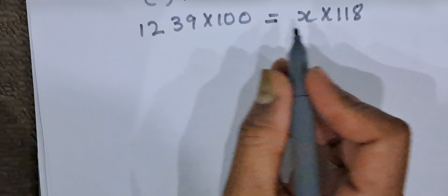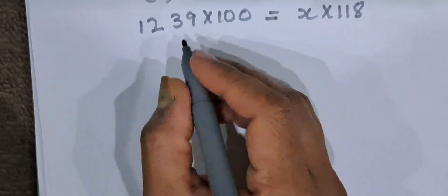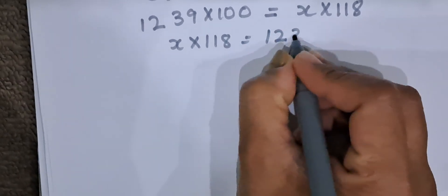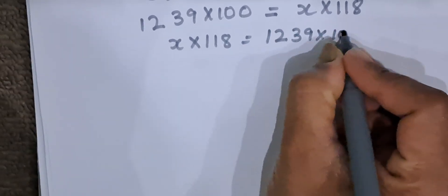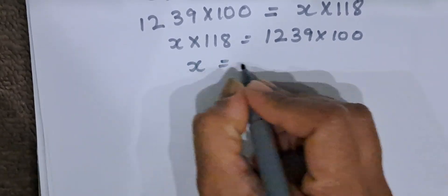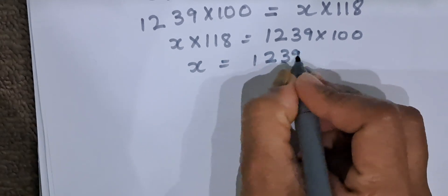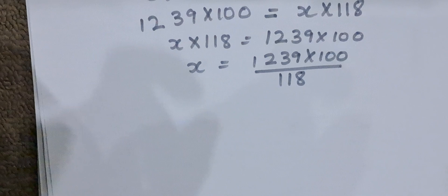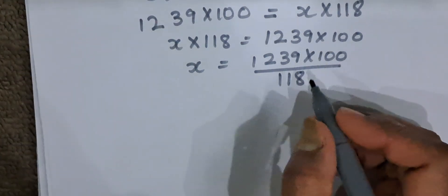Now let us see. We will swap this. X into 118 we will take on the left hand side. X into 118 is 1239 into 100. X will be 1239 into 100 upon 118. Now let us divide this.